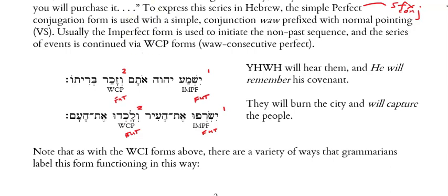Let's look at some examples. First: yishma Adonai otam — say these with me. We're using very similar language to our earlier examples, but notice I'm starting with an imperfect: yishma Adonai — that's usually what time frame? Usually future. So 'Yahweh will hear them' — future time. And then the next thing that will happen is given in a WCP form, a perfect form with the vav in front: vezakar brito. We're going to translate that as future, in keeping with the imperfect that started the sequence.